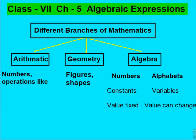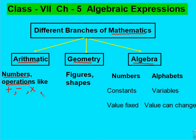In maths, there are different branches of mathematics like arithmetic, geometry, algebra, etc. Arithmetic and geometry we have already read and learned. In arithmetic, we mainly deal with numbers and use different operations like addition, subtraction, multiplication and division, and solve some real-life related problems. And in geometry, we mainly deal with figures and shapes like point, line, triangle, etc.